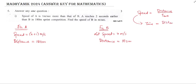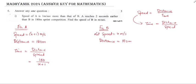Time is equal to distance divided by speed. Let's find out the time for A. The formula is distance by speed. The distance is 180 meters and the speed is x plus 1. So 180 divided by x plus 1 is the time for A to complete the race.